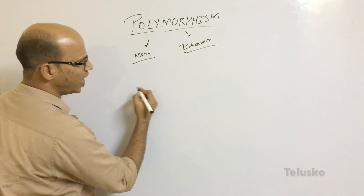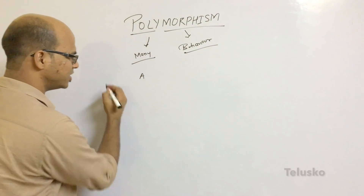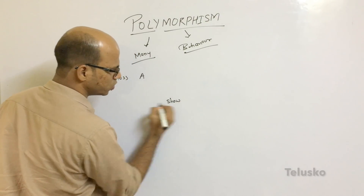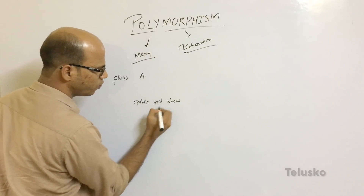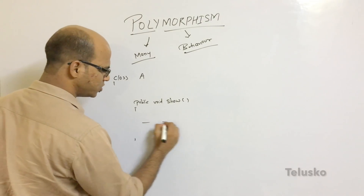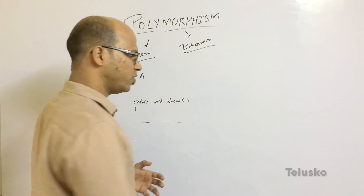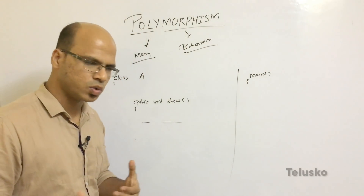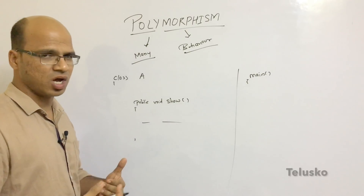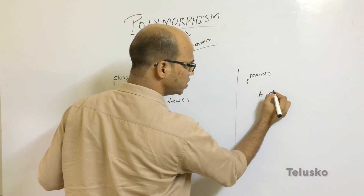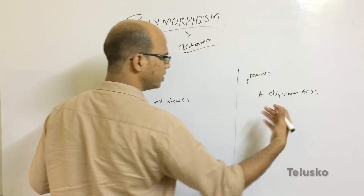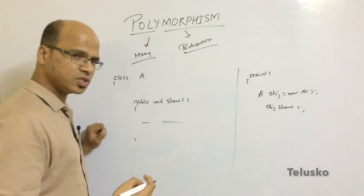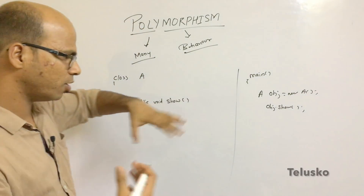Let's imagine we have a class which is A. So this is my class A, and in this class I have a method which is 'show.' That's how you define a method — you say public void show. Now to call this show, we need a main function. In the main function, you will call show. The way we call a method in Java is by creating an object, so you say A obj = new A, and now we can call obj.show. So we have one method, and we call it with the help of an object.